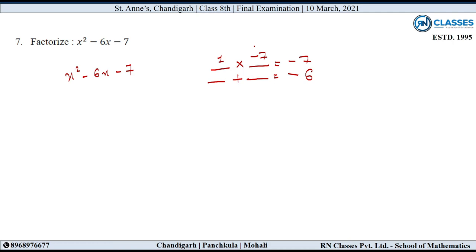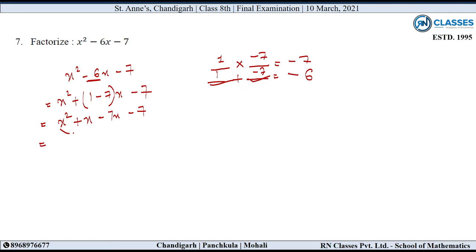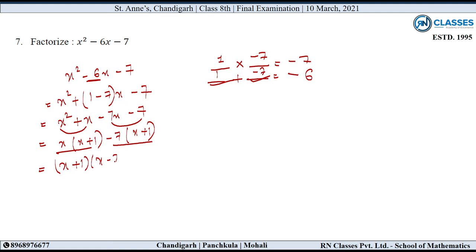तो x square plus (1 minus 7)x minus 7 as it is लिखते हैं, which opens to x square plus x minus 7x minus 7. अब group बनाएंगे: first group से x common, अंदर बचा x plus 1। Second group से minus 7 common, अंदर बचा x plus 1। अब इन दोनों terms में x plus 1 common है, तो अंदर बचा x minus 7. तो factors बने (x plus 1)(x minus 7).